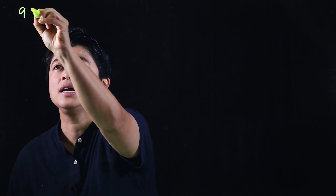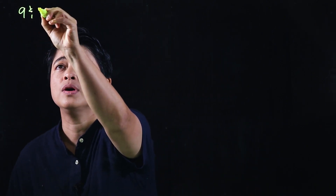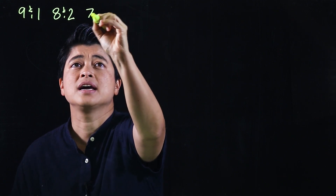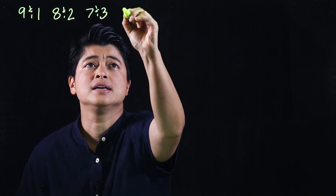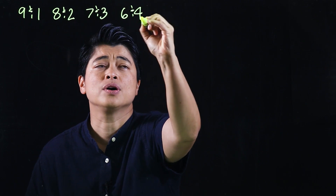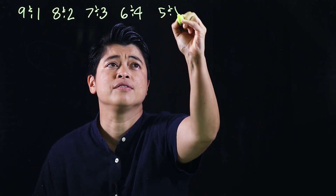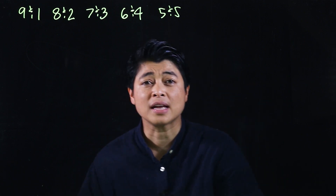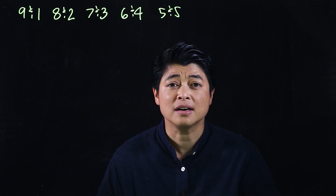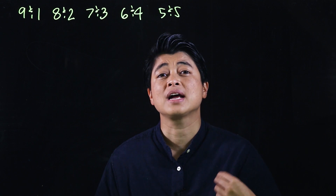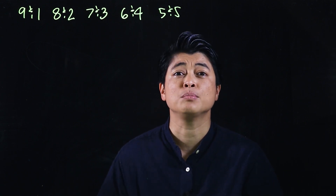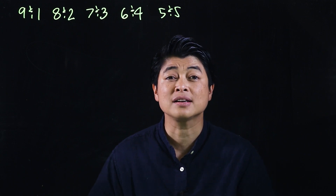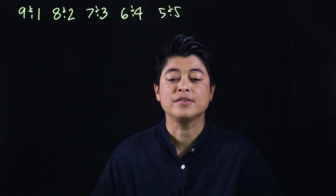The number pairs are: nine and one, eight and two, seven and three, six and four, and five and five. These are important in multiplication because we also have to add during the process. The first lesson comes from page 54.